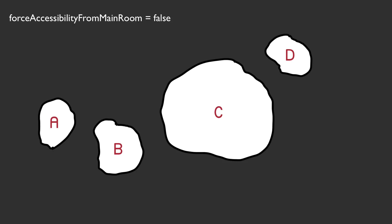In the first case where forceAccessibilityFromMainRoom is false, we go through each of the rooms. We start with room A, look at the distance to room B and room C, and find that the closest connection is to room B, so we make that connection.